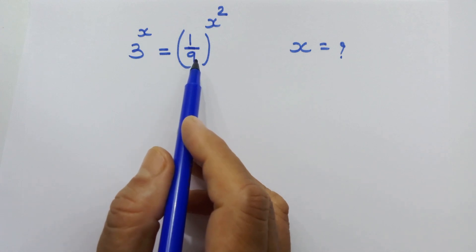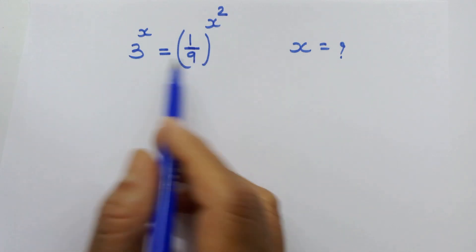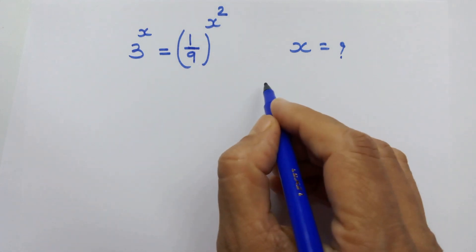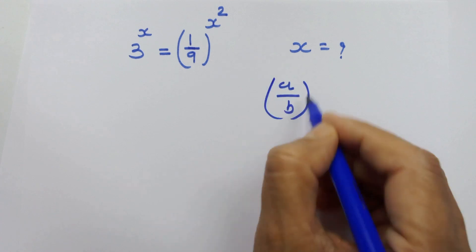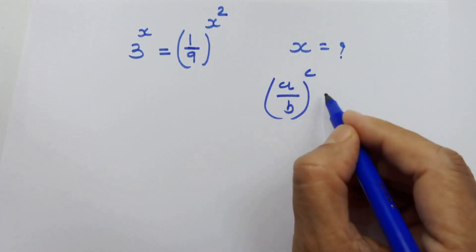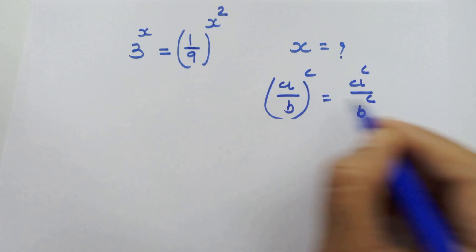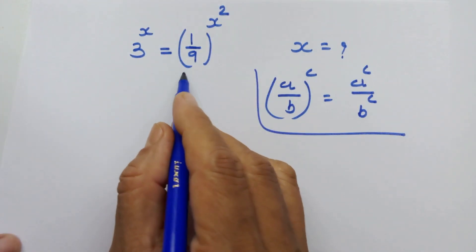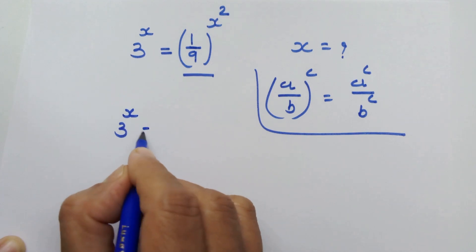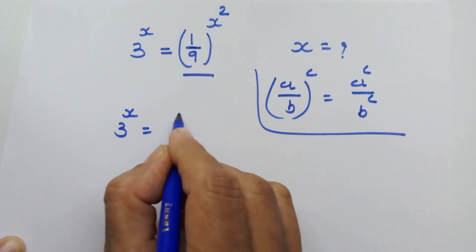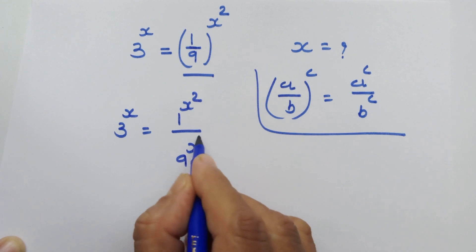By using rules of exponentiation we will get the same base at both sides. Now let's start. If we have a upon b whole raised to c, then we can write it as a raised to c upon b raised to c. By using this rule on this side, we can write 3 raised to x is equal to 1 raised to x square upon 9 raised to x square.